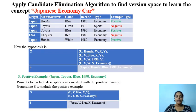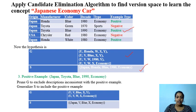Our current hypothesis is these two. On getting the next instance, which is a positive instance, we have to check G and S. We check the current instance against G. The first hypothesis is U, Honda, W, X, Y. U and Japan are getting matched, but Honda and Toyota are getting rejected. So we have to prune this hypothesis.